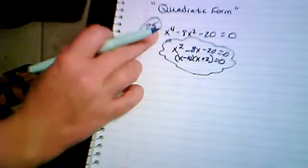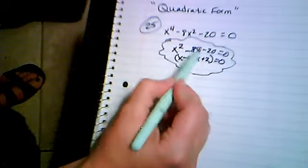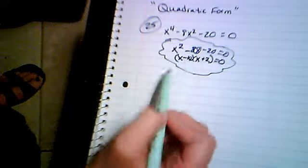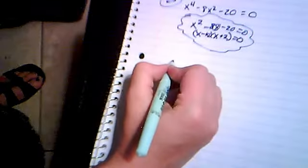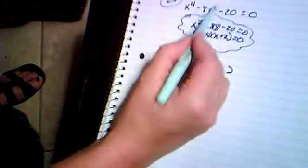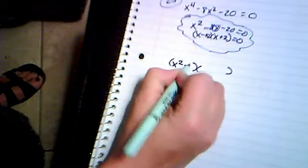Going back to this idea, notice how my thing in the middle, that's what goes in the first spot of my set of parentheses. When I factor this, instead of saying x, I'm going to say my middle thing, x squared. x squared minus 10 and x squared plus 2 equals 0.